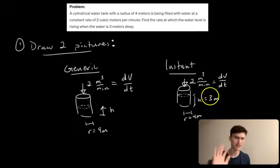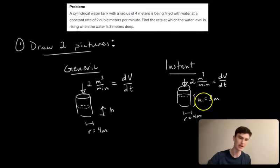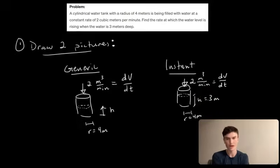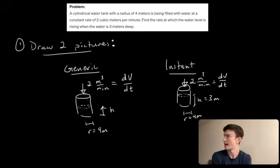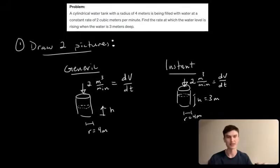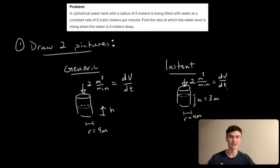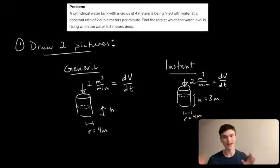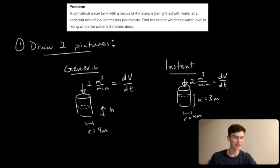The only difference in this specific picture is that we set h equal to 3 meters. In harder problems you'll get a lot more new data added to your instant picture, but I want to follow this process with something easy first so you can see how it works, and then we'll apply it to a much harder problem.